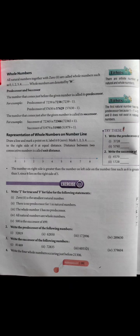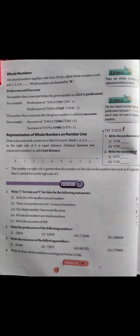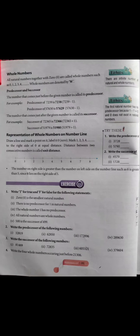Ab hum dekhenge second question: write the predecessor of the following numbers. Predecessor ka means maine pehle bataya tha — given number se pehle waala number. Jaise 32,819 ka predecessor hoga 32,818. Isi tarike se aapko remaining parts solve karne hain.